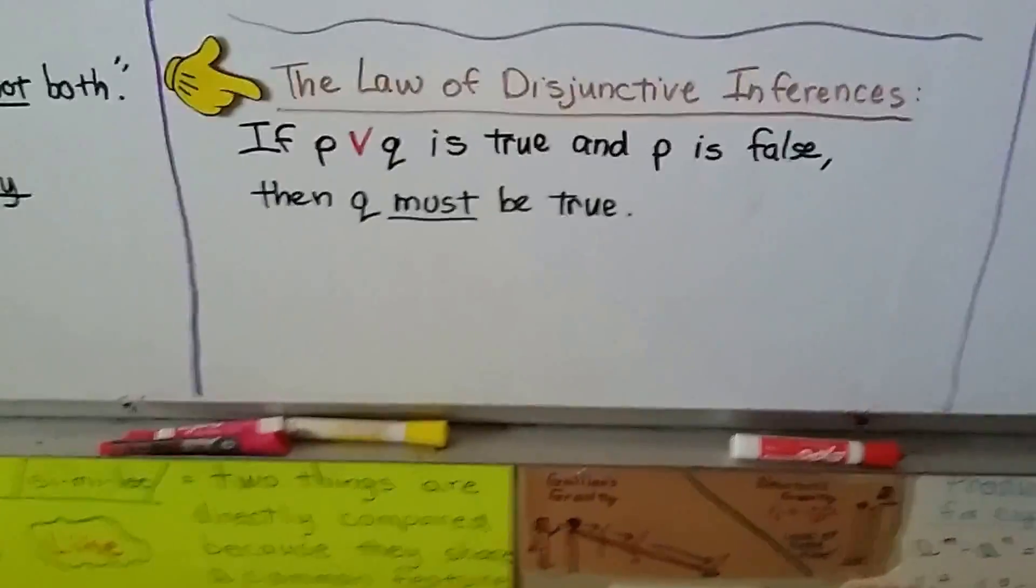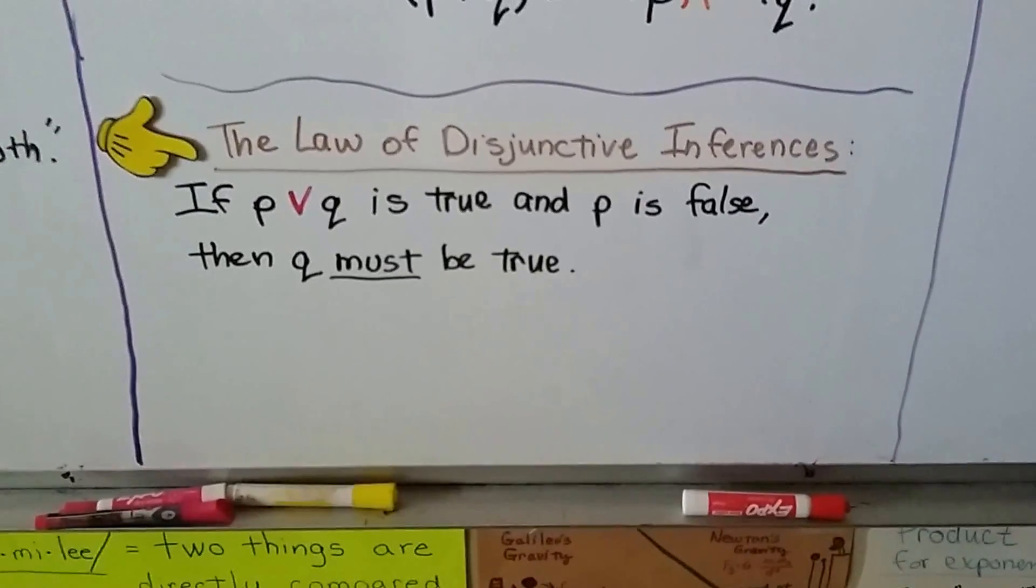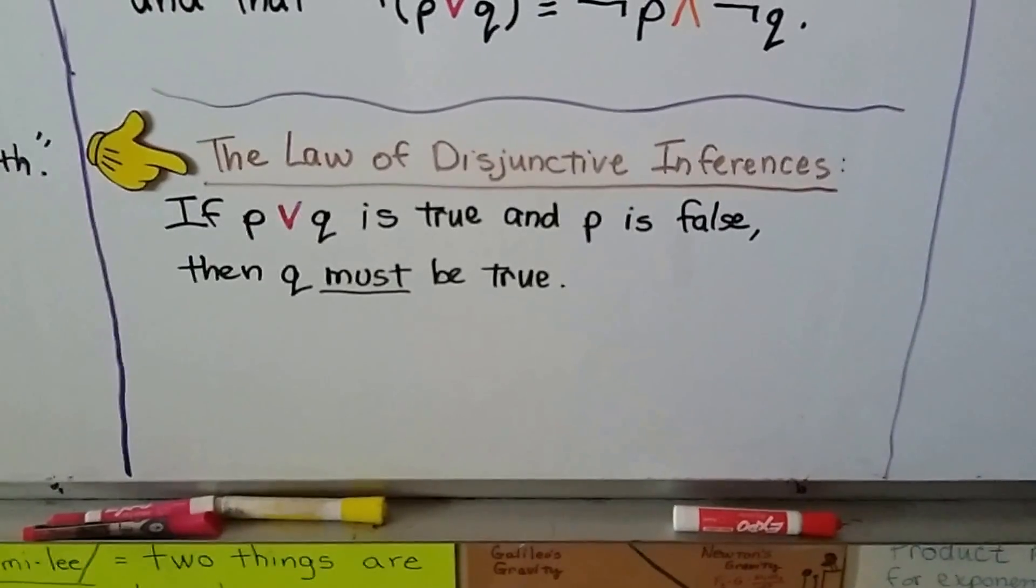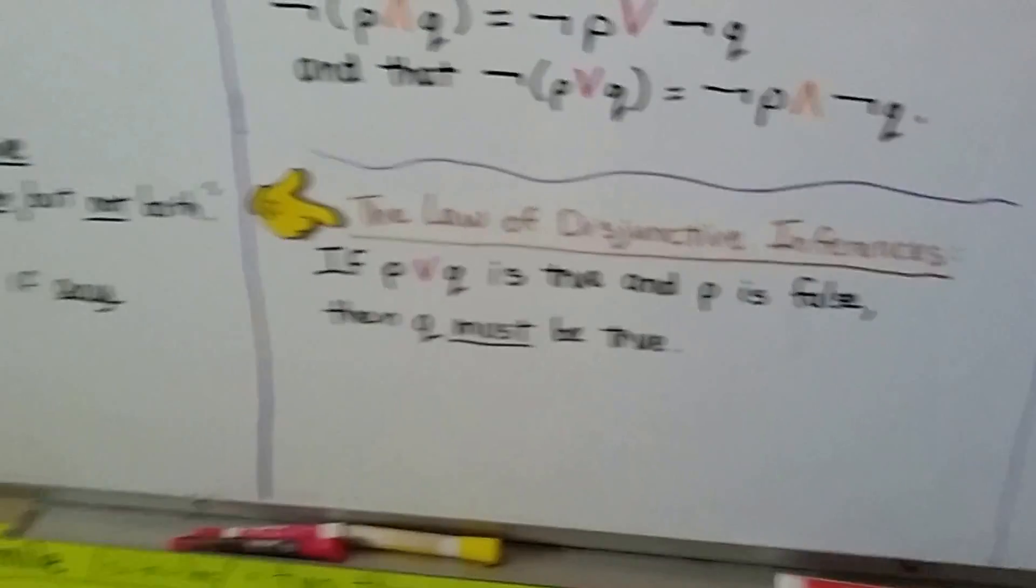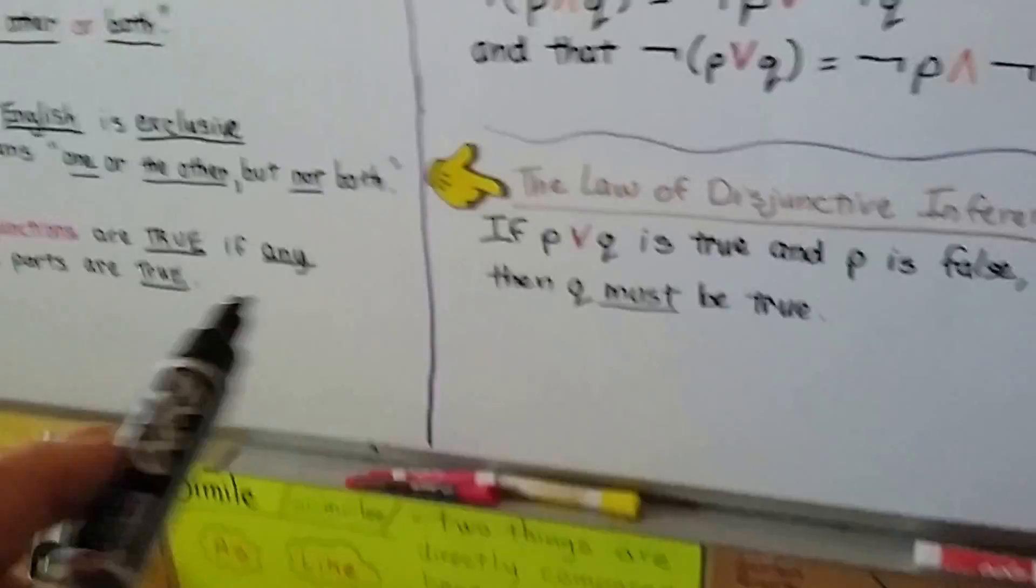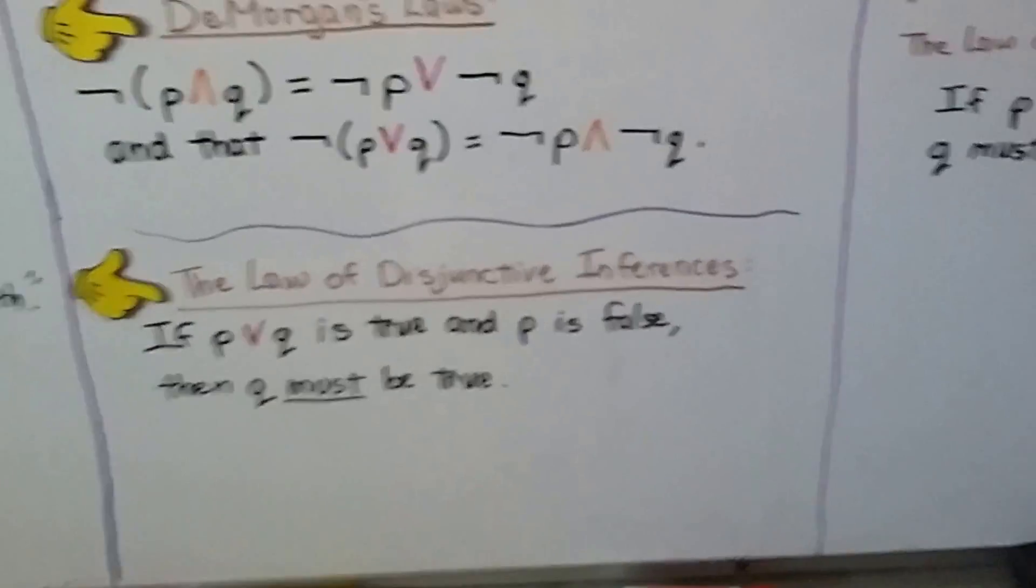Now, the Law of Disjunctive Inferences says if P OR Q is true and P is false, then Q must be true. Because remember, for the disjunctions, at least one part of it has to be true. So if we know P is false, then Q must be true.